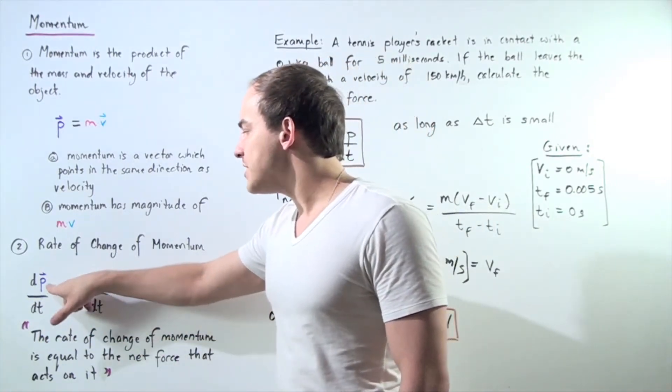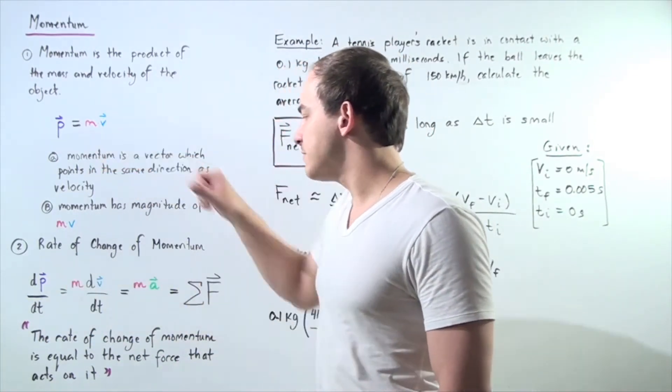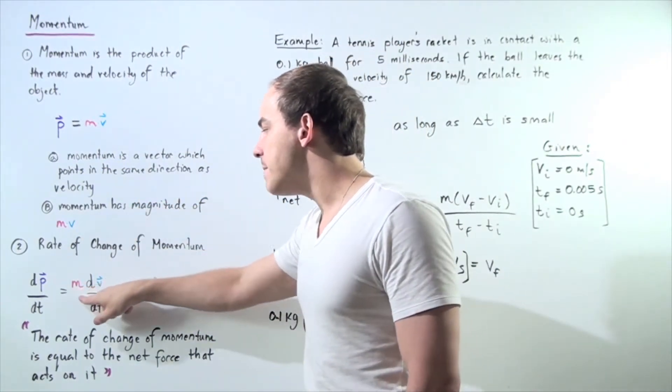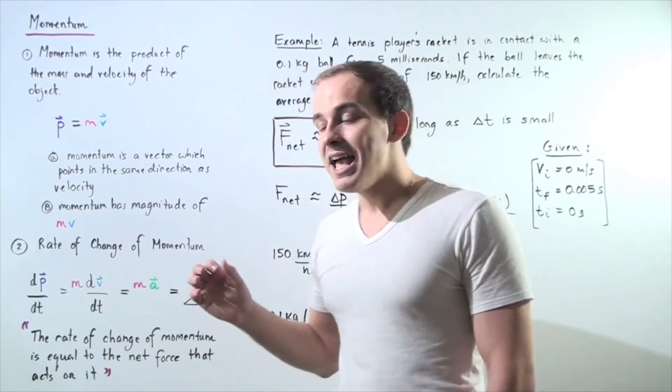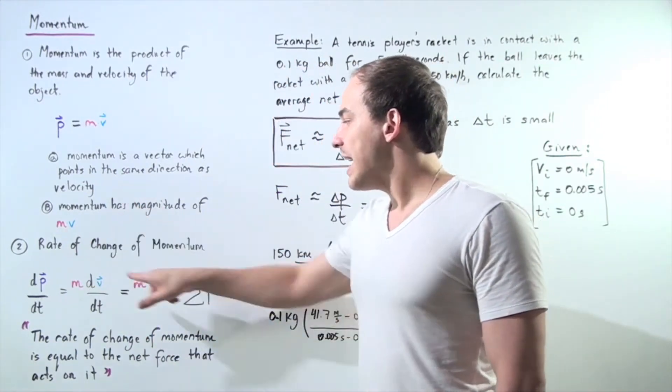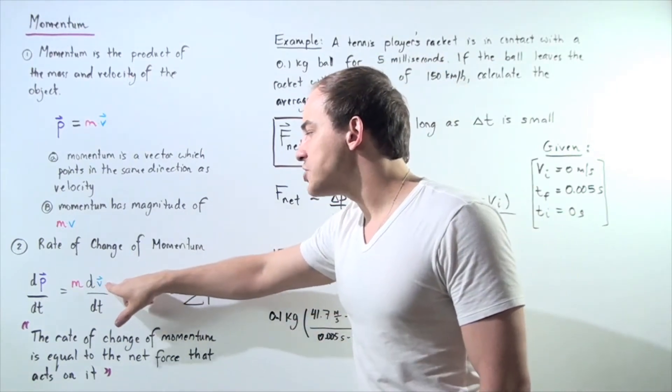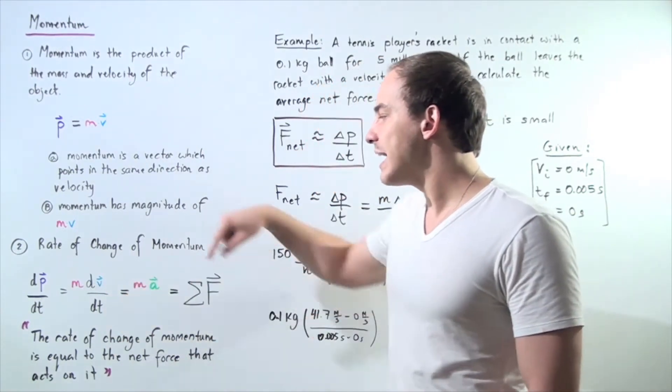Let's replace momentum with m times v. Notice the mass, which is a constant, we can take that out and we get the mass multiplied by the rate of change of velocity function with respect to time.